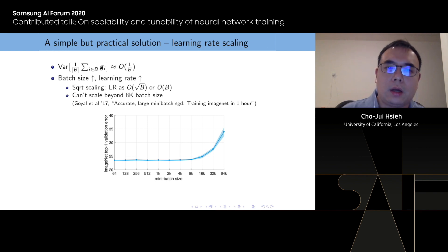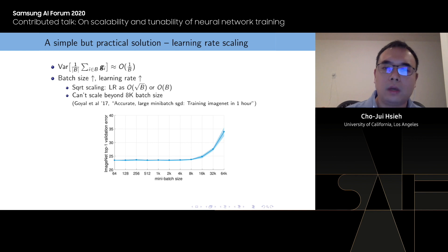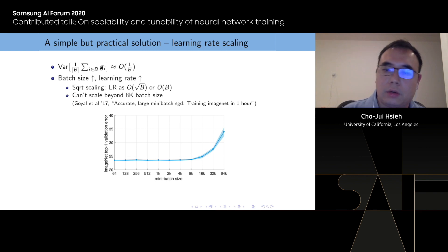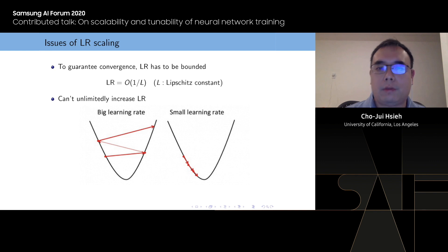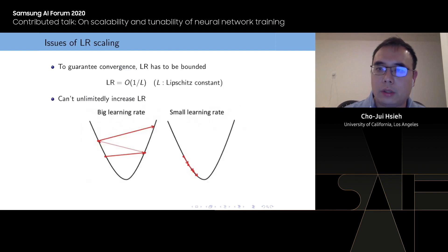Several rules have been proposed, like linear learning rate scaling or square root learning rate scaling — both try to increase your learning rate when you increase the batch size. However, there's a limitation. For ImageNet, people can only scale to batch size 8000 and cannot recover the original performance at 16,000. The reason is that in gradient descent, your learning rate has to be upper bounded by a constant called the Lipschitz constant. When your learning rate exceeds this bound, the algorithm diverges instead of converges.